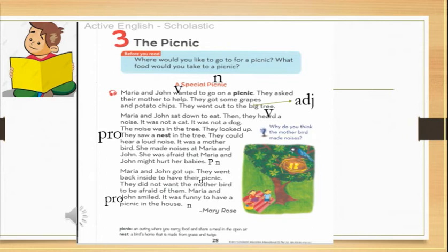Now Maria and John got up. They went back inside to have their picnic. They did not want the mother bird to be afraid of them. Maria and John smiled and it was funny to have a picnic in the house. Here we have mother - noun. Noun. Ism. Mother - noun.